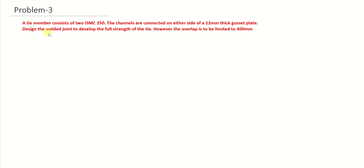This is the third problem related to welded connections. A tie member consists of two ISMC 250 channels connected on either side of a 12mm thick gusset plate. Let us draw it - this is the 12mm thick gusset plate and two channels are connected on either side like this.